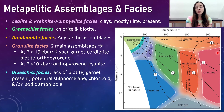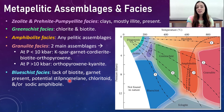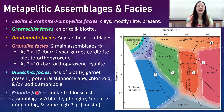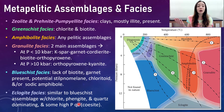In the blueschist facies — high-grade pressure-wise but not so much temperature-wise — there is a lack of biotite, but garnet is present, along with potentially stilpnomelane, chloritoid, and/or sodic amphiboles. The high-grade eclogite facies, which is high in both temperature and definitely pressure, is similar to blueschist assemblages for pelitic rocks, but with chlorite, phengite, and quartz dominating. Sometimes the high-pressure quartz polymorph coesite is present, indicating really high pressure conditions.